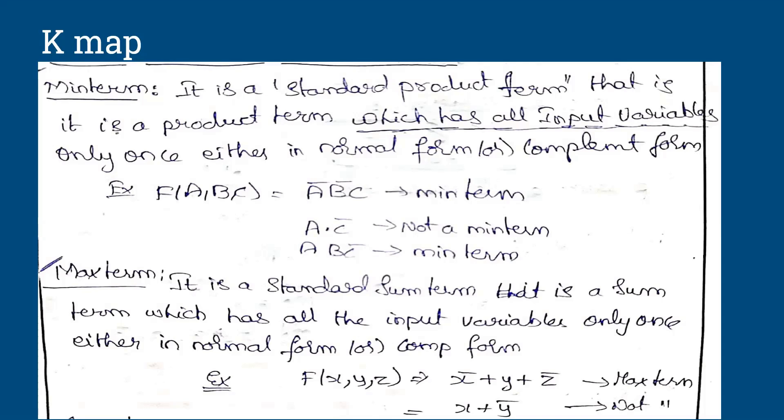What is a minterm? Minterm means standard product term. That is a product term which has all input variables only once, either in normal form or complement form. So if you see the function, it is a variable of three variables. So if A bar B bar C is a minterm because all three variables are present in the expression. If two variables are present, it is not a minterm. Only if three variables are present is it a proper minterm.